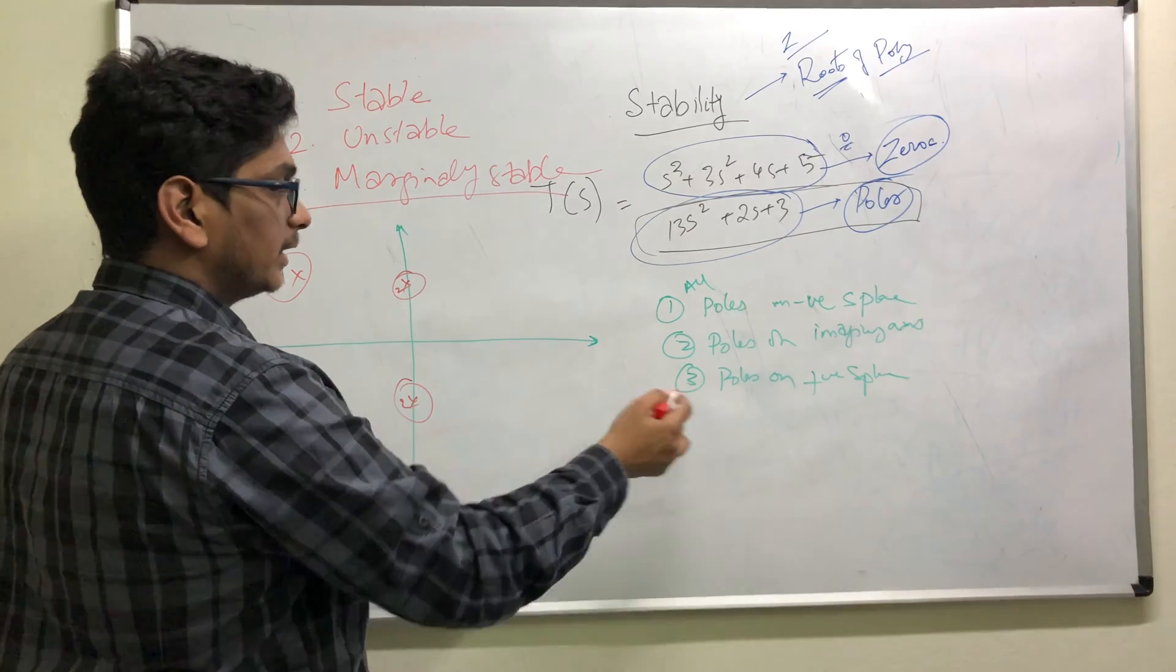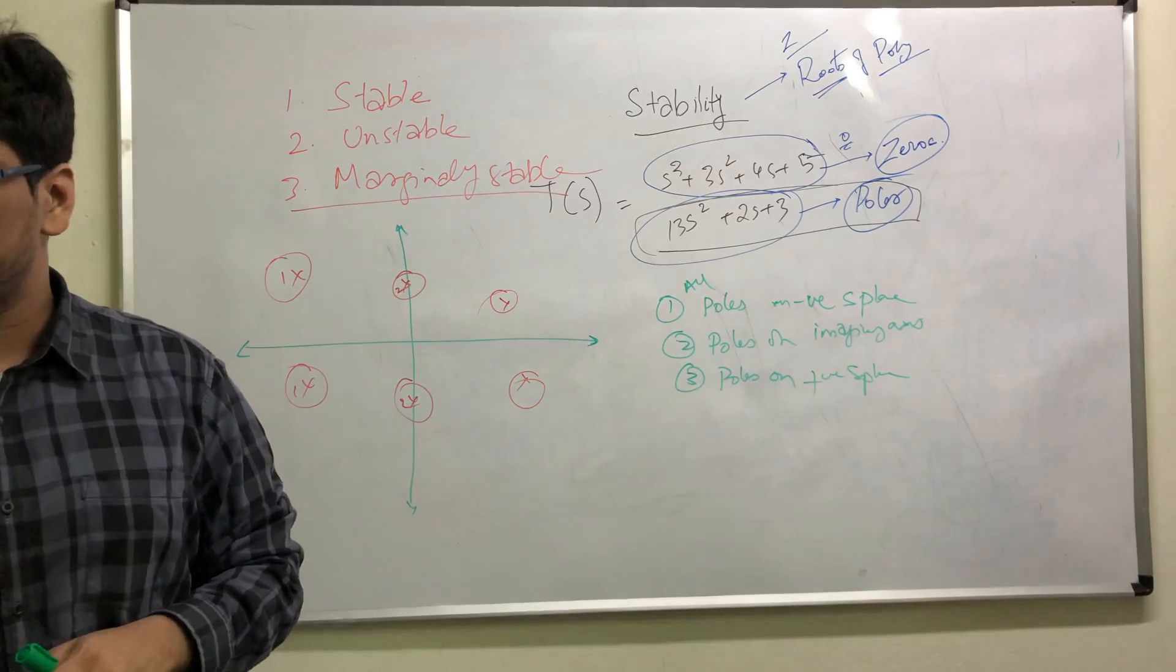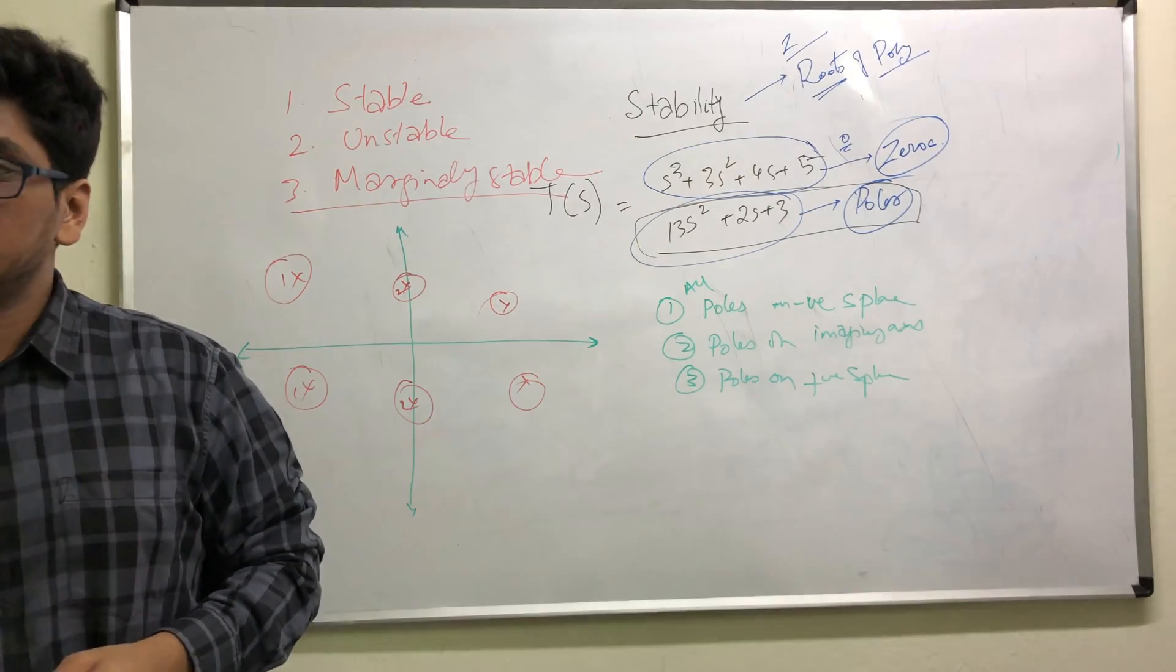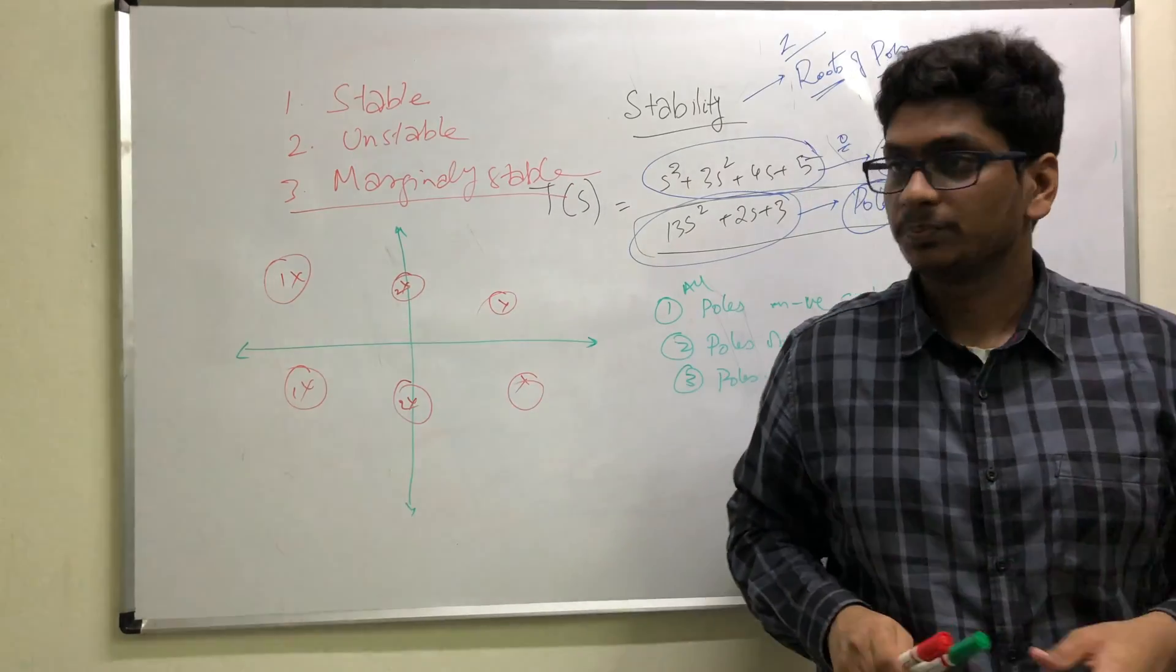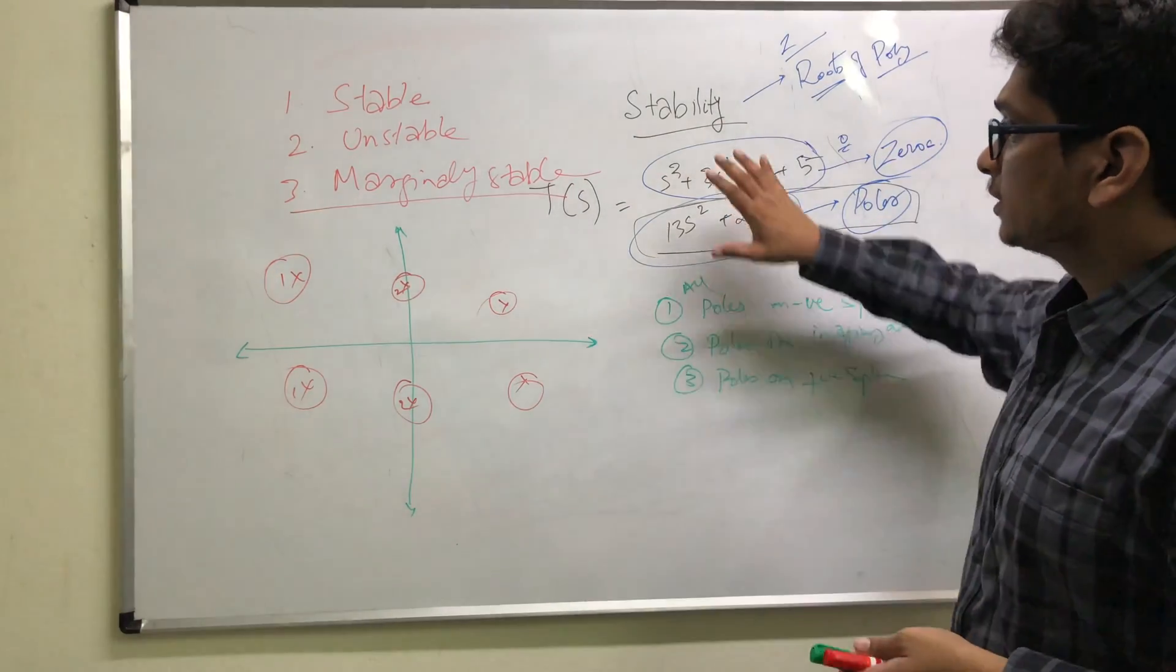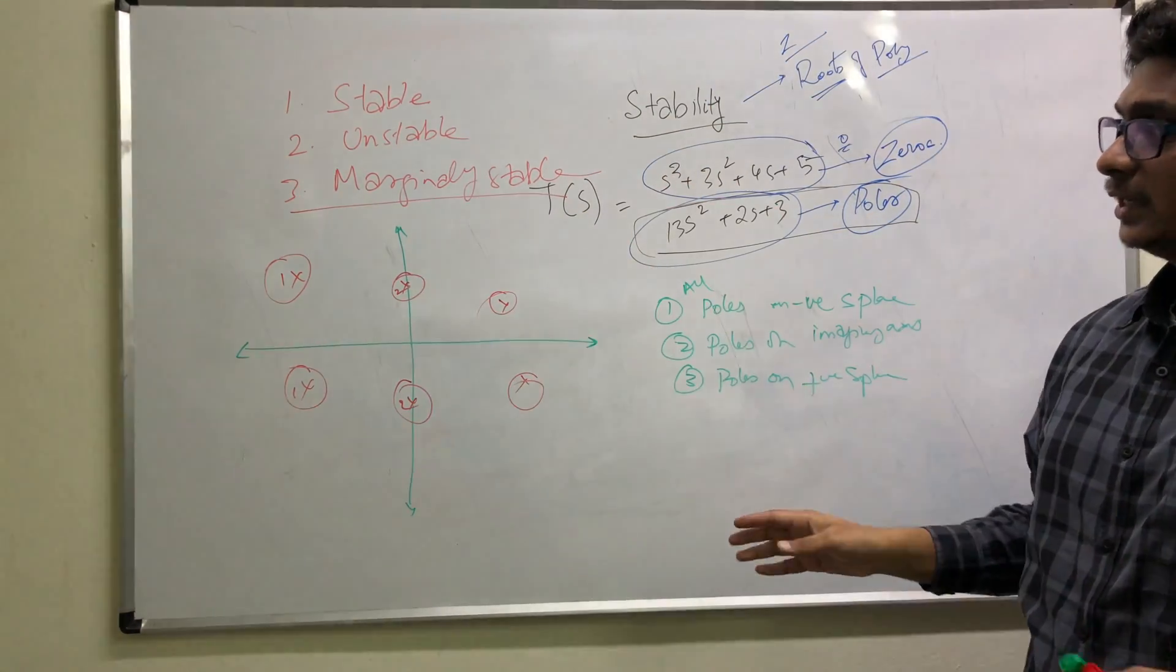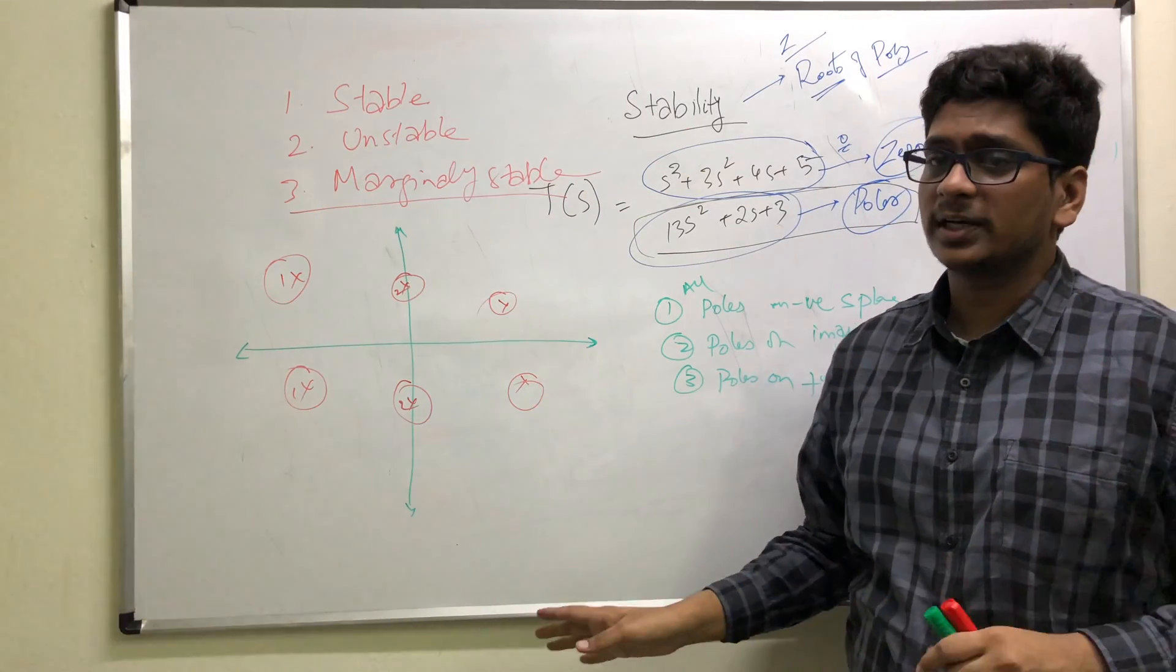And if there is any pole, even if there is one pole on the positive half of the s-plane, the system is unstable. This is the basic concept of stability. If you understand this, you will easily solve any problem that comes out of Routh's criteria, which at least one question you can expect.